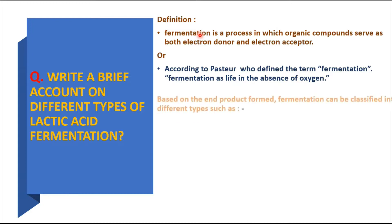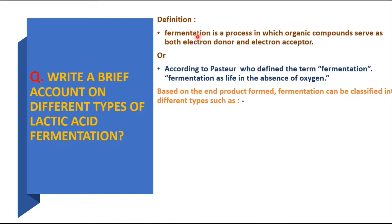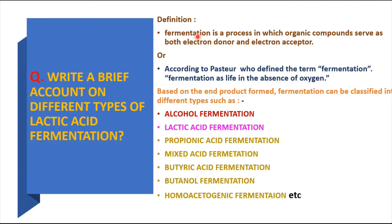Based on the end product formed, fermentation can be classified into different types such as alcohol or ethanol fermentation, lactic acid fermentation, propionic acid fermentation, mixed acid fermentation, butyric acid fermentation, butanol fermentation, and homoacetogenic fermentation. In this video, we are going to discuss lactic acid fermentation.